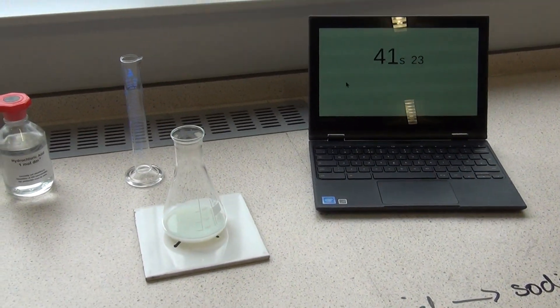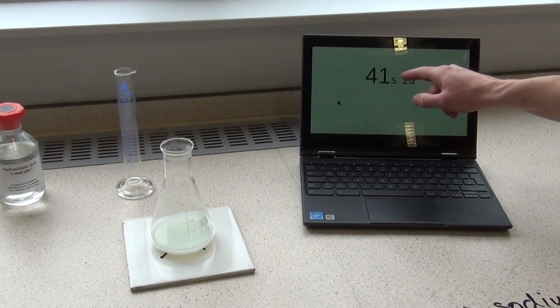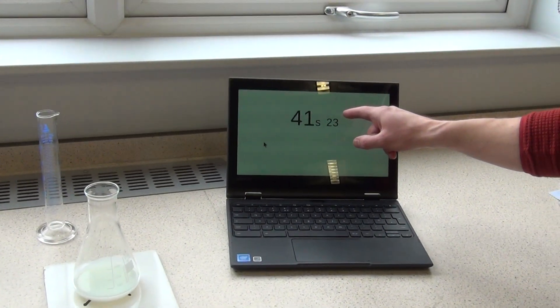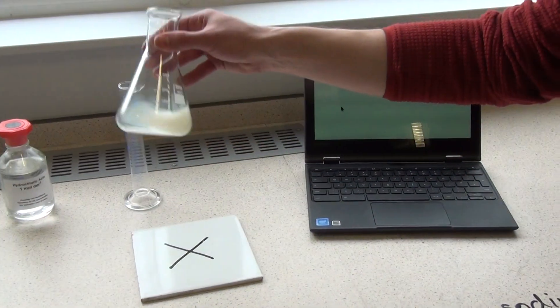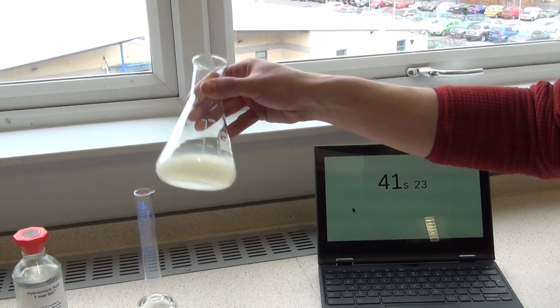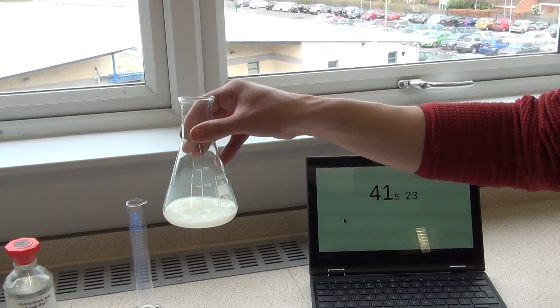So we can say that the shorter this time is, the faster the rate of reaction, because this cloudy precipitate would have formed quicker if the time taken to block out the cross is lower.